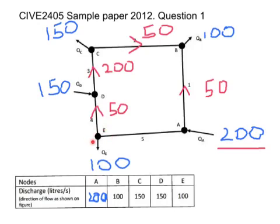At node E: we've got 100 out and 50 out, so we've got to have 150 in — 150 along A to E. Let's just check node A: 200 in, 150 out, 50 out. Continuity is satisfied at every node.